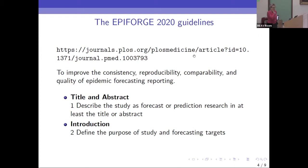I get told nothing about the data, the quality of the data, the actual methods used. How did you decide on those parameter values? Was there any coherence in any of this at all?